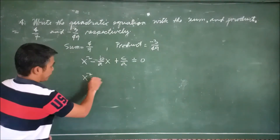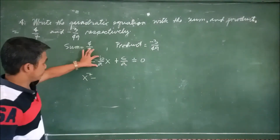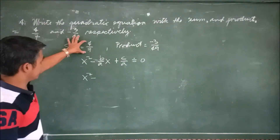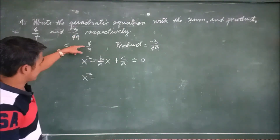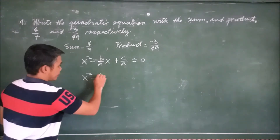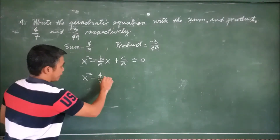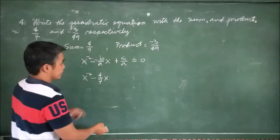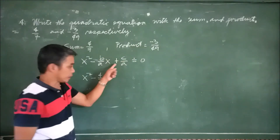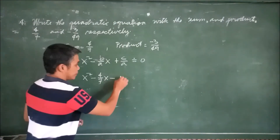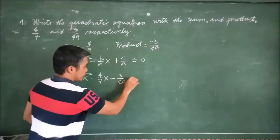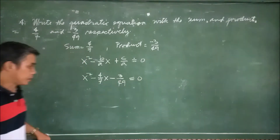Substituting: x² minus the sum 4/7 times x, then plus the product. Since we have a negative sign in front and the product is negative 3/49, positive times negative gives negative, so we write minus 3/49. Therefore: x² − (4/7)x − (3/49) = 0.